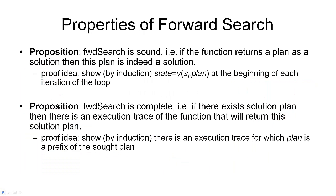You have seen that the algorithm was only a very small step given all the definitions we had before. But now we want to say a little bit more about the algorithm. Specifically, the algorithm possesses two properties that are very important: forward search is sound, and forward search is complete. Soundness means that if the function returns a plan as a solution, then this plan is indeed a solution. If the algorithm was not sound, it could return a plan that isn't a solution, so we would still not know what the solution is. But the algorithm is sound.